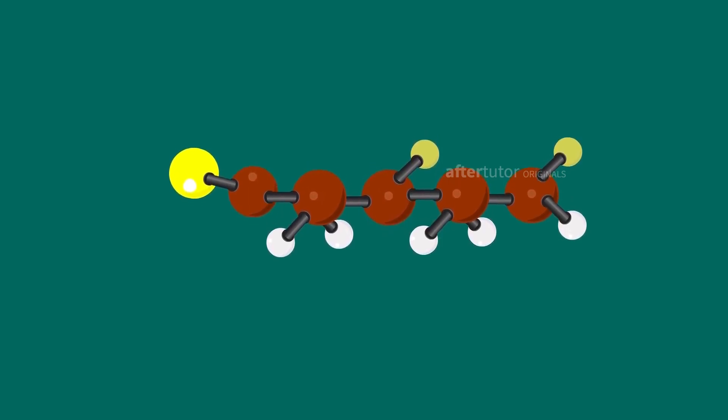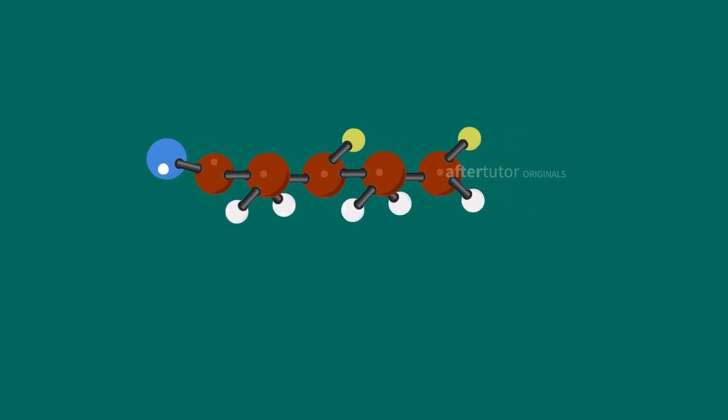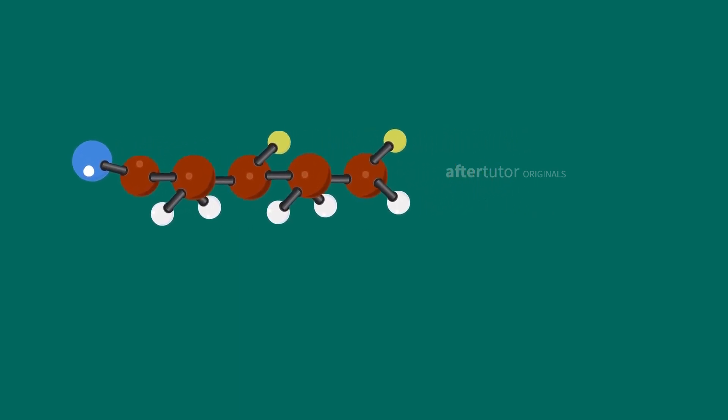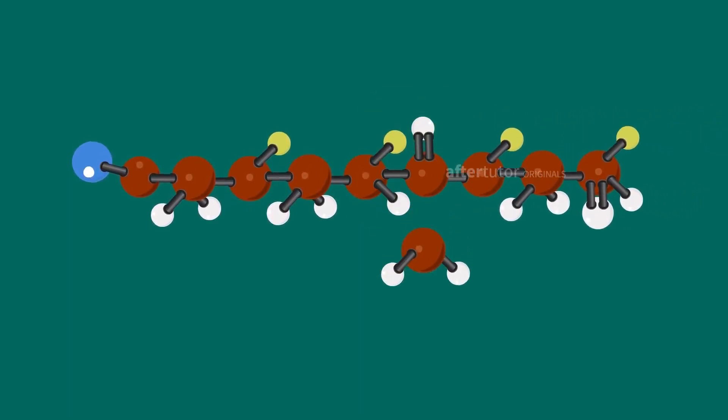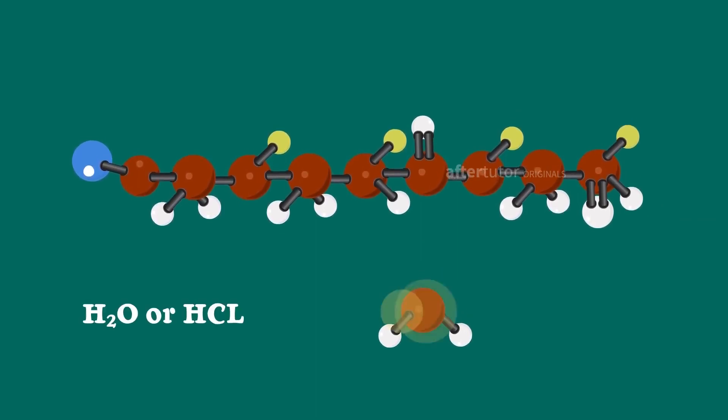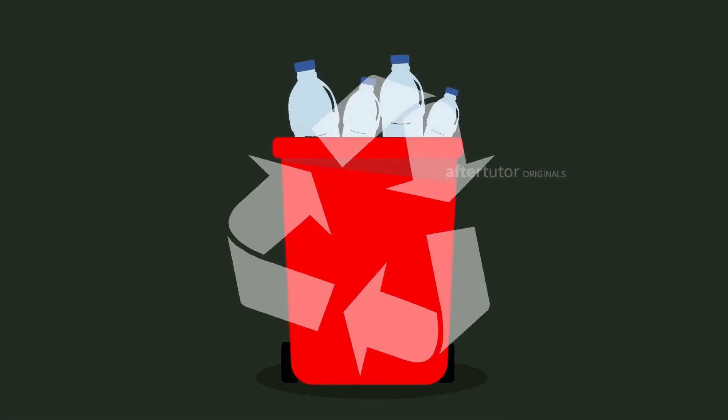Similarly, condensation polymerization is also as same as addition polymerization, but it forms a polymer through the condensation reaction with the elimination of smaller molecules such as water or HCl. For example, nylon.